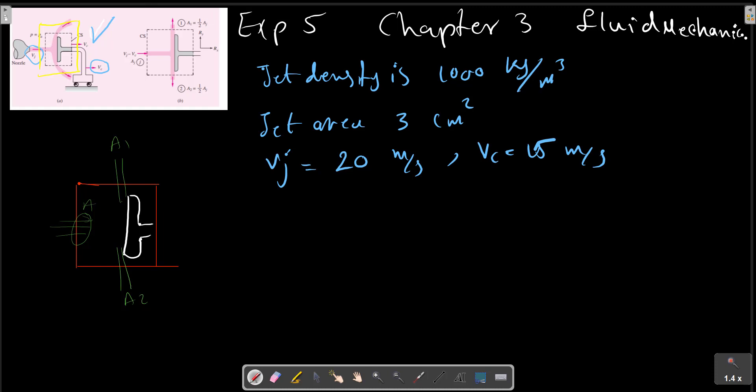The force on the system is the summation of inlet and outlet. For example, M dot, we can write ρ1 A1 V1 plus minus out, minus out, minus Σ ρ1 V1 A1 in.